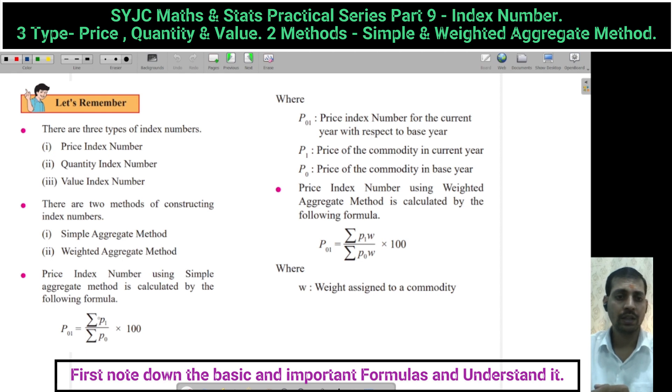Price Index Number formula: summation P1 upon summation P0 into 100. P01 is called Price Index Number for the Current Year with respect to the Base Year. P0 is the Base Year Price, P1 is the current year price. 0 represents the Base, and 1 is the current.